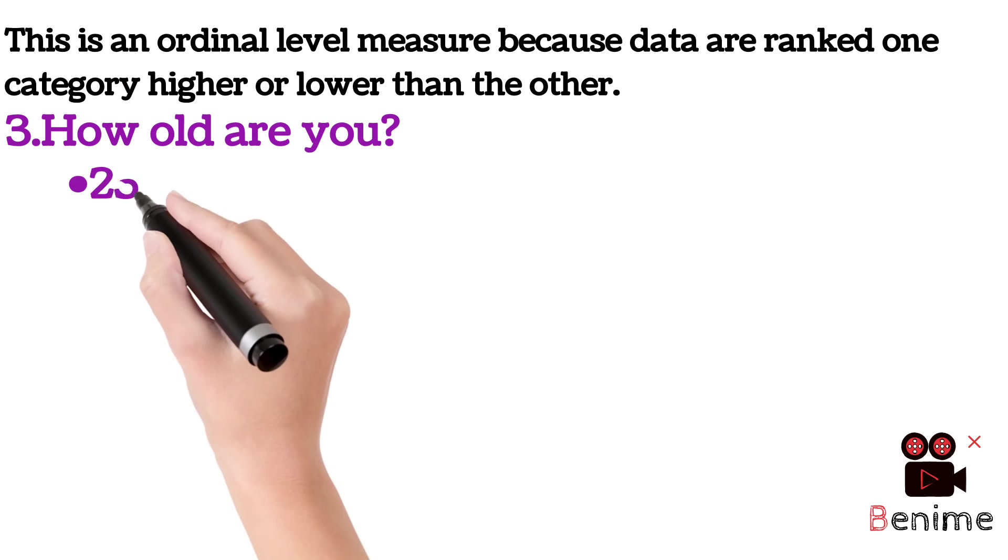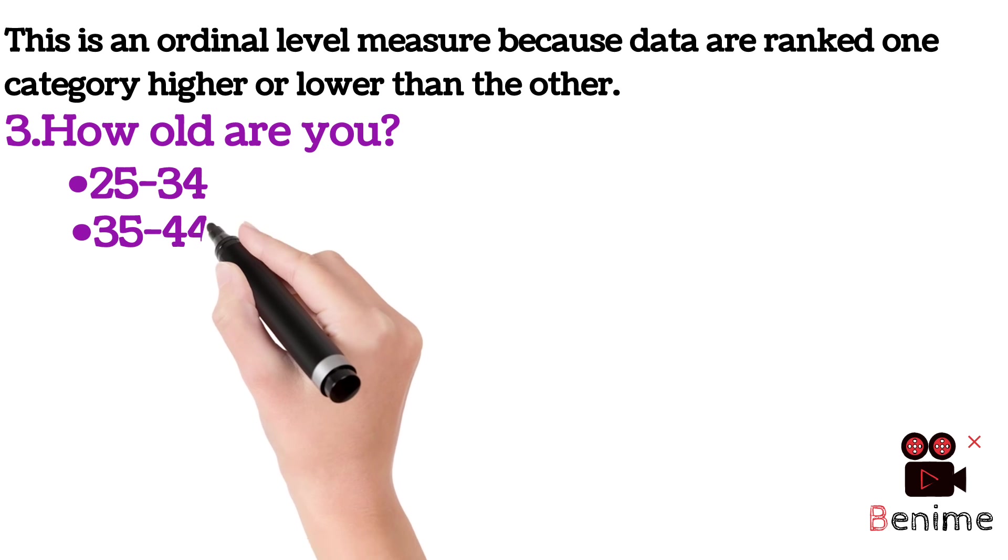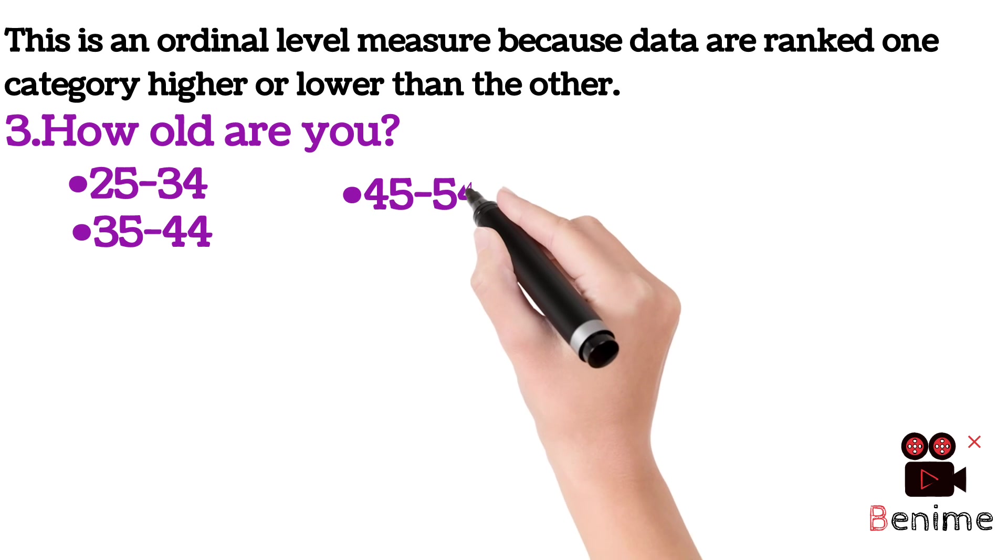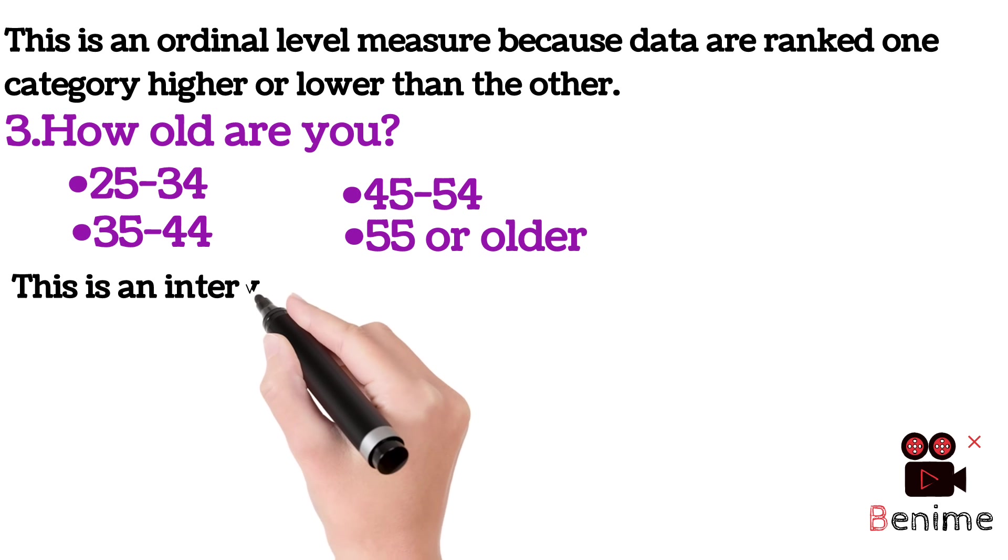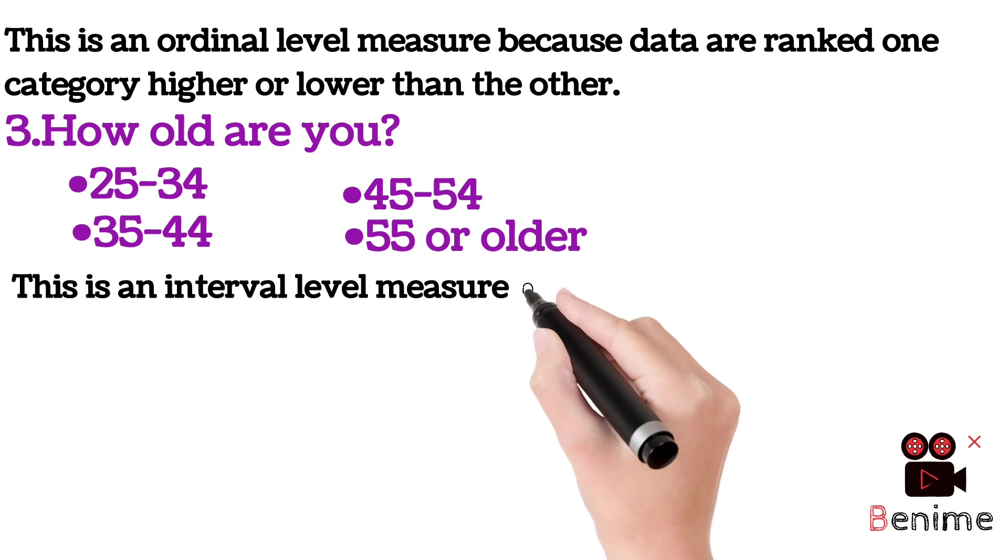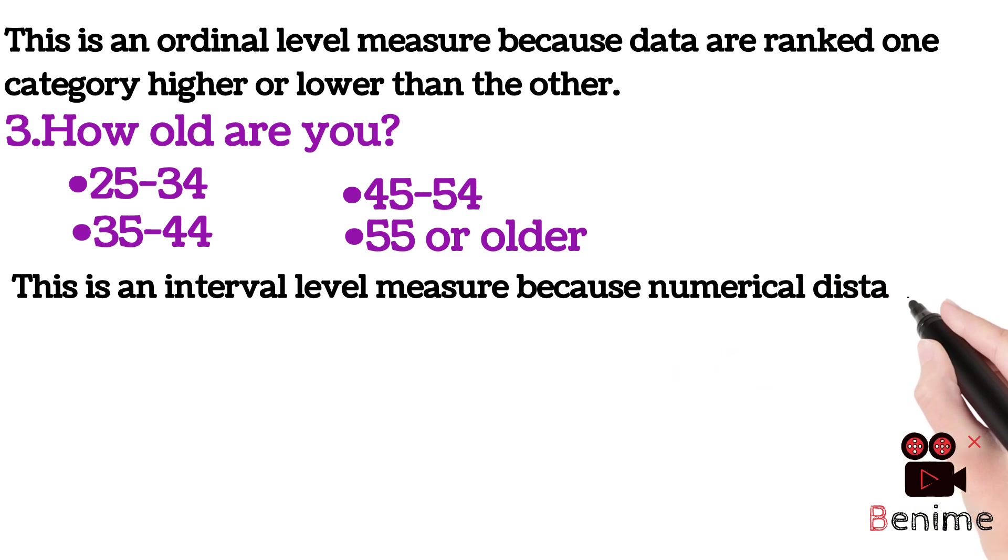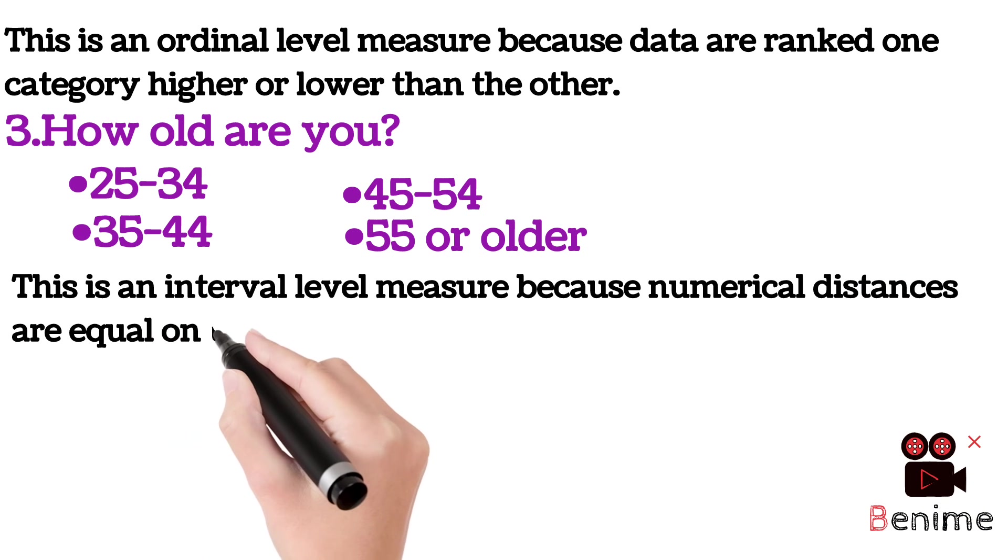Third one, how old are you? 25 to 34, 35 to 44, 45 to 54 and 55 or older. From the choices we can see this is an interval level measurement because numerical distances are equal on the scales.